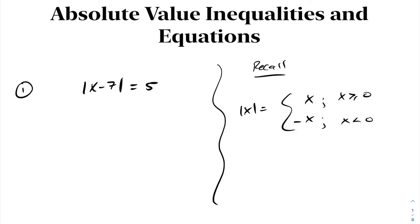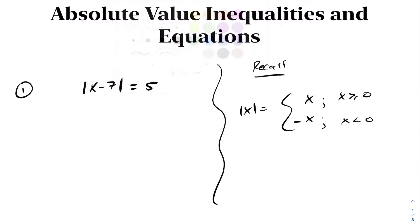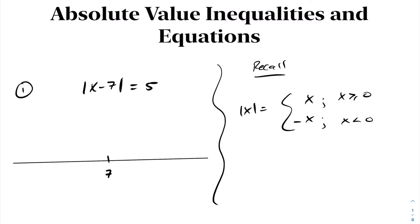So let's take a look at our absolute value equation. The first thing you want to do is identify when the value inside of our absolute value function will be 0. So in this case, if I let x be 7, we can see we'd be taking the absolute value of 0. We then want to draw ourselves a number line, and on this number line we want to mark the value of 7. When x equals 7, this will be the absolute value of 0.